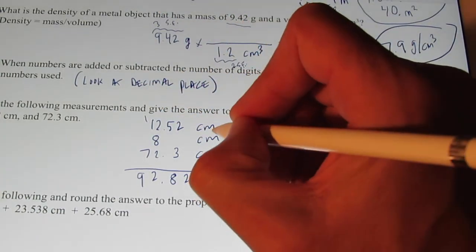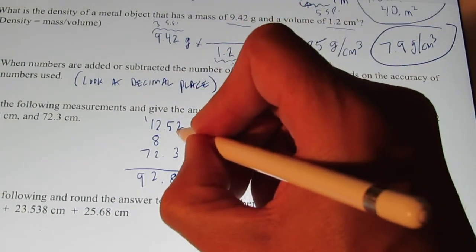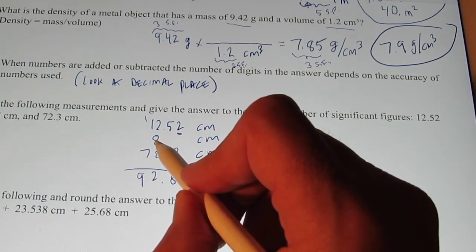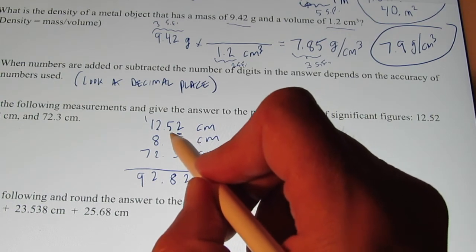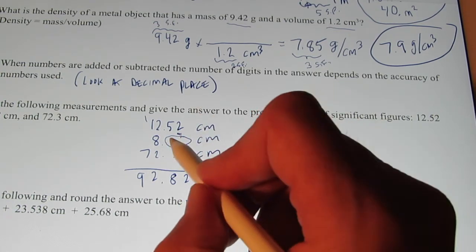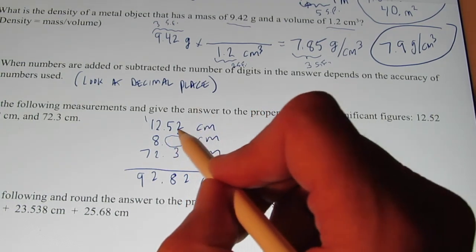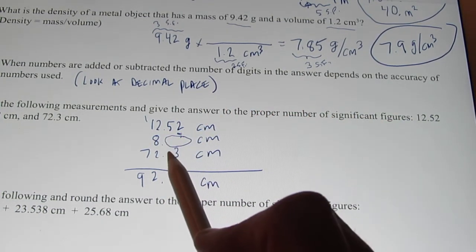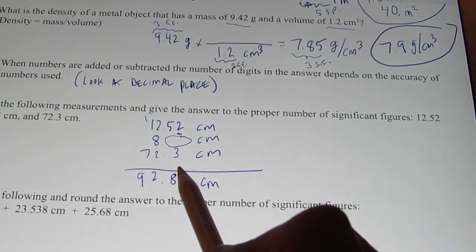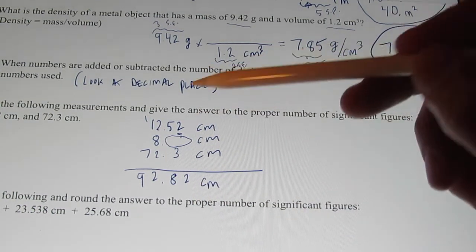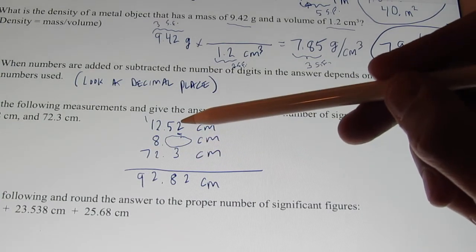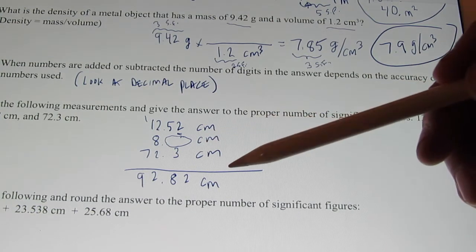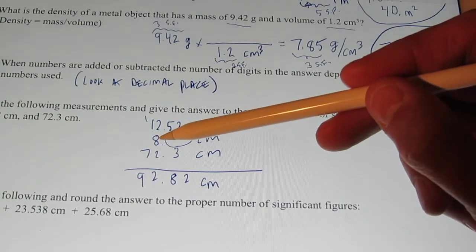In my second, though, I only knew it to the nearest whole centimeter. I had no idea what came after that 8. That could have been a 1, it could have been a 2, who knows? Maybe this was 7.9. I don't know what comes after that 8. And in my third measurement, I only knew it to the nearest tenth. I didn't know what came after that 3. So, which of these should I round it to? To the nearest hundredth, to the nearest whole number, or to the nearest tenth? Well, we have to go with the least accurate, which is to the nearest whole number.